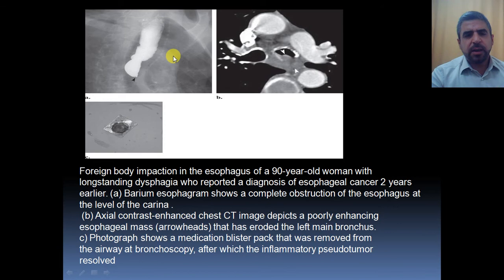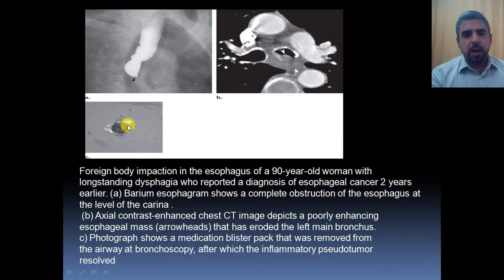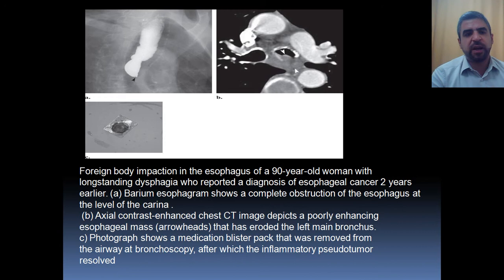This is an elderly woman of 90 years old, previously diagnosed with esophageal carcinoma. Esophagography shows complete obstruction of the esophagus near the level of the carina with no passage of contrast distally. On CT scan, there appears to be a mass-like lesion corresponding with the esophageal carcinoma diagnosis, appearing to invade the posterior wall of the left main bronchus. However, upon endoscopy, there was a blister pack — a pill cover — chronically impacted in the esophagus, resulting in inflammation and a mass-like lesion very similar to esophageal carcinoma. There was no esophageal carcinoma — just an inflammatory pseudotumor, which completely resolved after removal of the impacted foreign body.